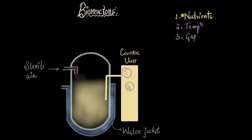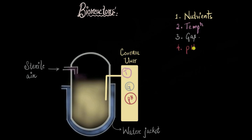We have now taken care of nutrients, temperature, and aeration. Next, we should check the pH of the bioreactor vessel. What if the culture broth is highly acidic or very basic? The ideal pH for bacterial growth is around 4.6 to 7. If conditions are too basic or acidic, we can add acids or bases to adjust the pH. Any deviation in pH is sensed by the control unit, so the fourth thing we take care of is the pH of the culture broth.